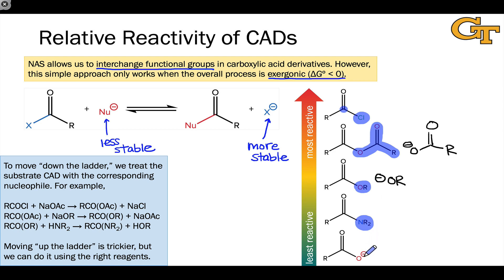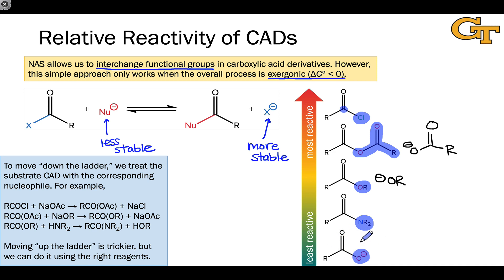Finally, at the very bottom, we have carboxylates — the conjugate bases of carboxylic acids. These are the least reactive of all because the anionic oxygen in a carboxylate is a terrible leaving group. It can't depart with a pair of electrons, as that would put a minus-two charge on the oxygen atom. This tends to be the ionization state we find when we place carboxylic acids in the presence of a good nucleophile — the nucleophile spontaneously deprotonates the acid and generates the carboxylate. So watch out for carboxylic acids under basic or strongly nucleophilic conditions; what you're really dealing with is a carboxylate, not a carboxylic acid.